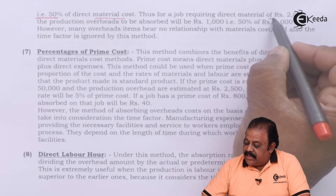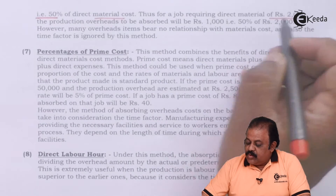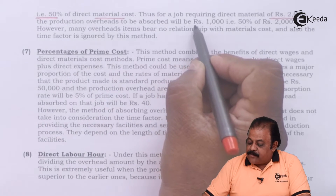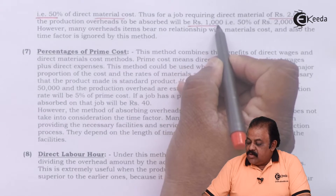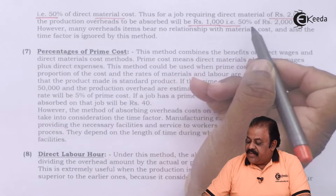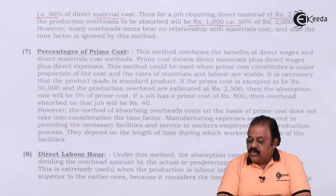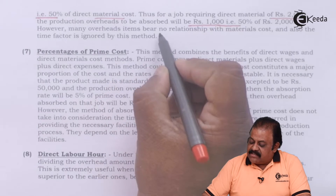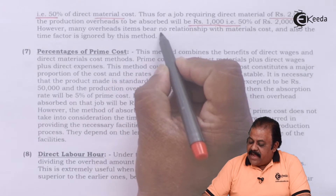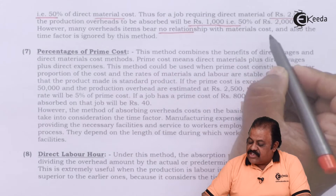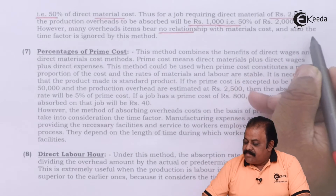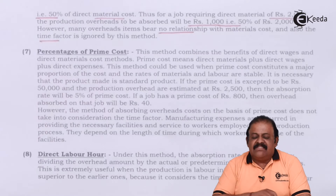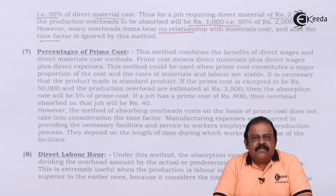For a job requiring direct material of Rs. 2,000, the production overheads to be absorbed will be Rs. 1,000, that is 50% of 2,000. However, many overhead items bear no relationship with material cost, and the time factor is also ignored by this method.